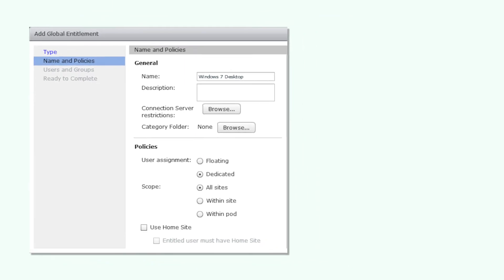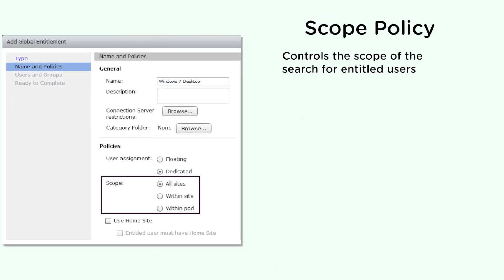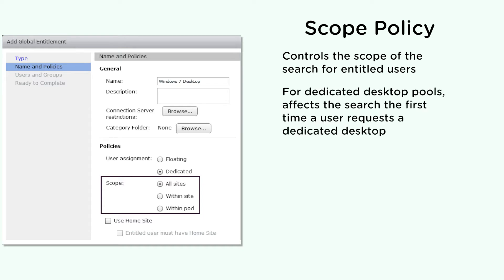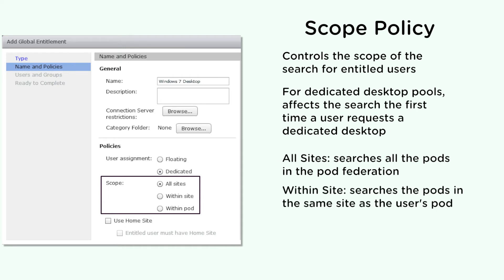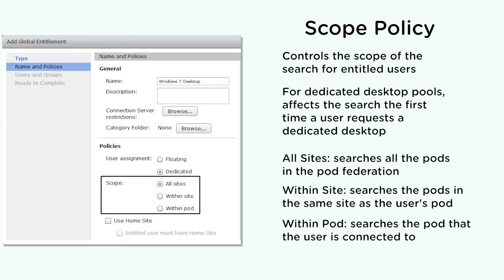Let's look at the scope policy first. The scope policy controls the scope of the search when looking for desktops and applications in the pod federation. For global entitlements that contain dedicated desktop pools, the scope policy only affects where to look for desktops the first time a user requests a dedicated desktop. The all sites scope policy setting searches in all the pods in the pod federation. The within site scope policy setting searches the pods in the same site as the user's pod. The within pod scope policy setting searches the pod that the user is connected to.